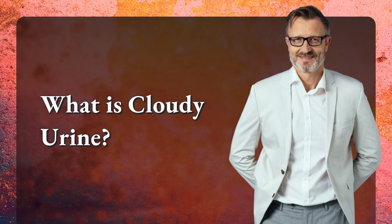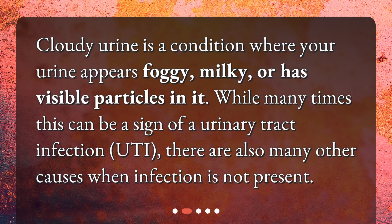What is cloudy urine? Cloudy urine is a condition where your urine appears foggy, milky, or has visible particles in it. While many times this can be a sign of a urinary tract infection (UTI), there are also many other causes when infection is not present.